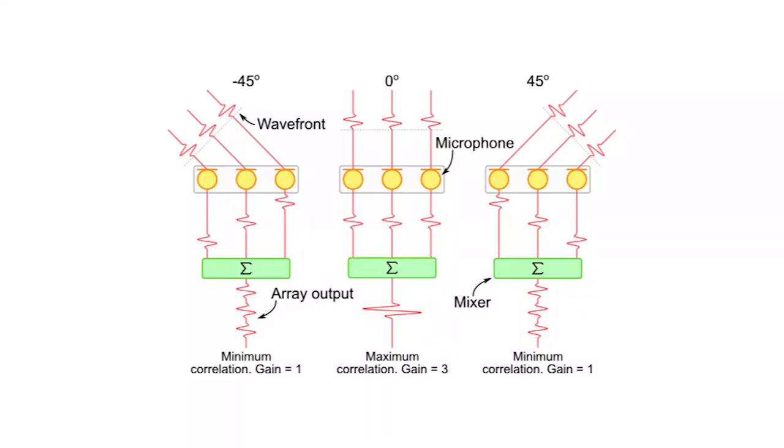The first method that we explored for beamforming is called delay and sum. Say we want to focus the array at the center. If the sound source is sufficiently far, the wavefront the source generates will hit the array of microphones all at the same time. If we sum the signals of the microphones, they will constructively interfere and will generate an output with a high amplitude.